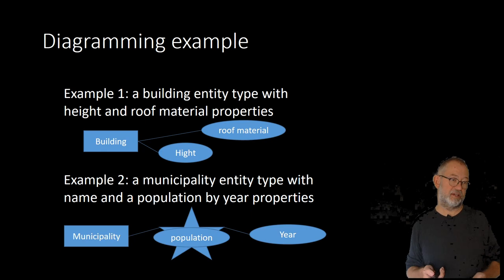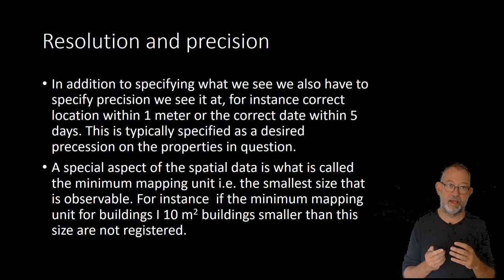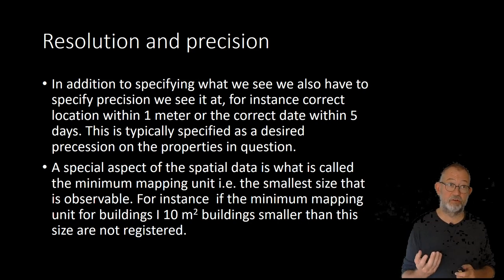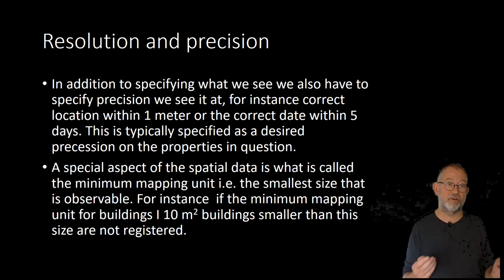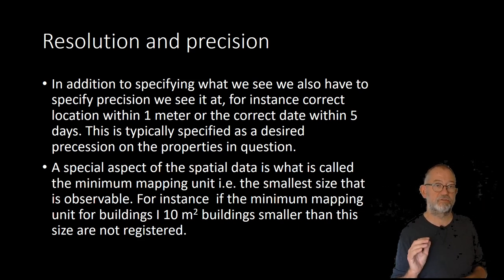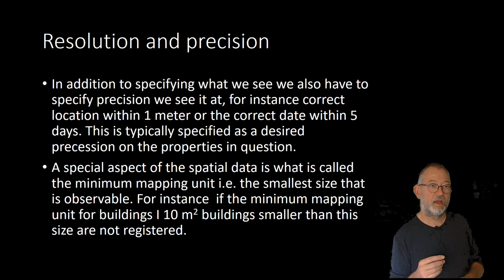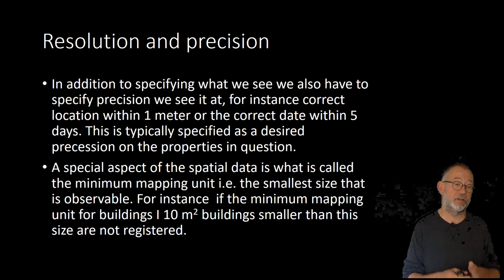In addition to these things, we will have to specify some more elements for the geographical aspect. One important thing is specifying which position we need — are the buildings precise within one meter, ten meters, or five meters? Or are dates precise within plus or minus five days or ten days? So we will have to look at specifying a precision for our attributes, which we call a desired position. And there is another special thing we call resolution — how precise are we going to be? We are not going to register everything in the world.